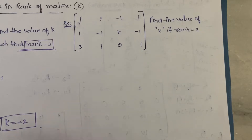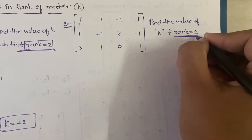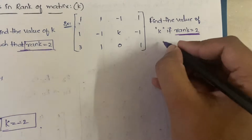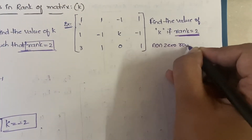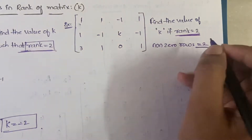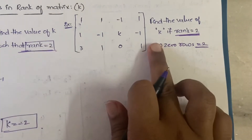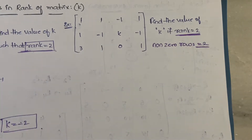Rank equal to 2 means the number of non-zero rows is 2. So non-zero rows should be two, meaning only one row can become all zeros — all zeros are left in only one row.